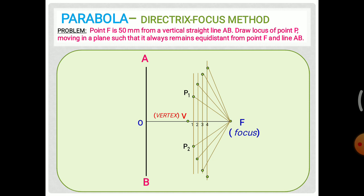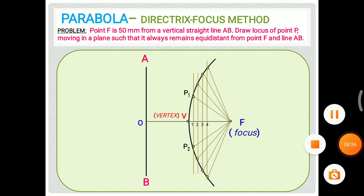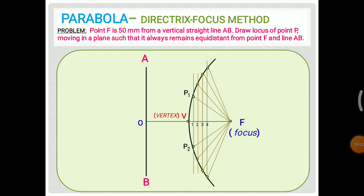Joining all these points with the vertex, we obtain the required curve. This is the required parabola. The curve passes through the vertex, and the curve is named as parabola. Name the other points P3, P4, P5, P6, P7, P8 in the required order. This is the required directrix focus method of parabola, giving us the locus curve.